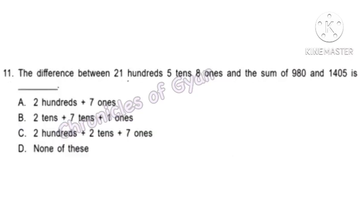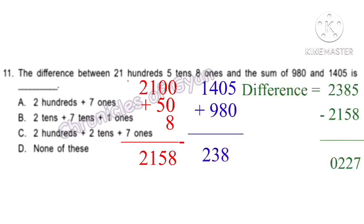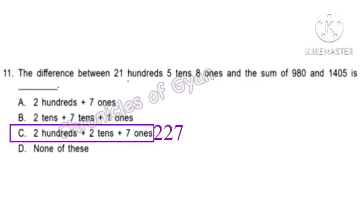Question 11. The difference between 21 hundreds, 5 tens, 8 ones and the sum of 980 and 1,405. 21 hundreds, 5 tens, and 8 ones is 2,158. The sum of 980 and 1,405 equals 2,385. The required difference is 2,385 minus 2,158 equals 227 — that is two hundreds, two tens, and seven ones. Option C.